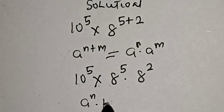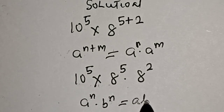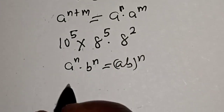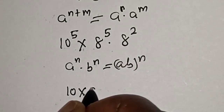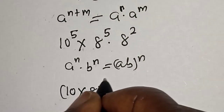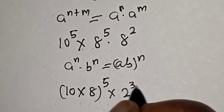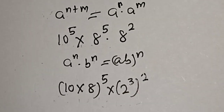Multiplied by b raised to power n, this is equal to a·b raised to power n. Now this is 10 multiplied by 8 raised to power 5, then multiplied by 2 raised to power 3, raised to power 2.